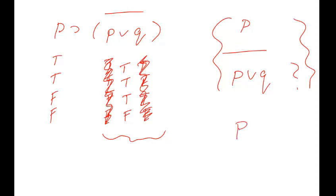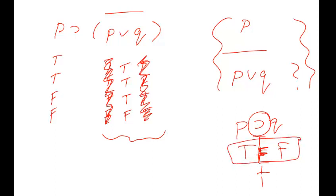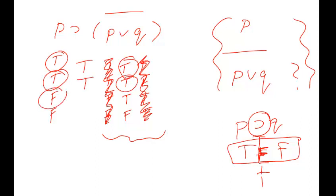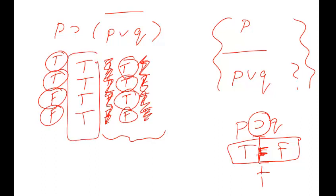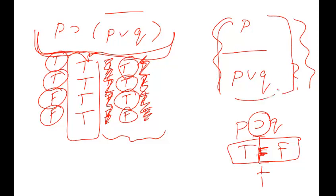The value for the conditional P → (P∨Q) is T, T, T, T. A conditional is false only when the antecedent is true and the consequent is false. Here: T and T gives T; T and T gives T; F and T gives T; F and F gives T. This statement turns out to be a tautology, so it's valid to conclude P∨Q from P.